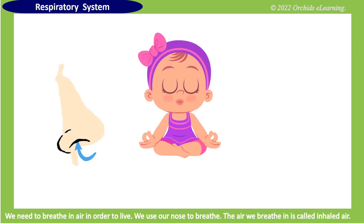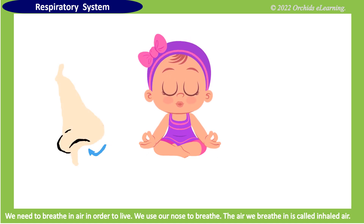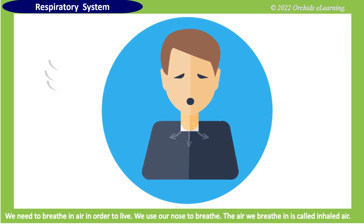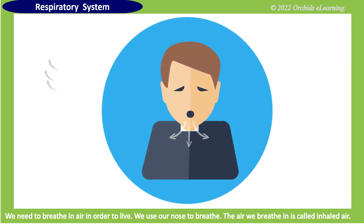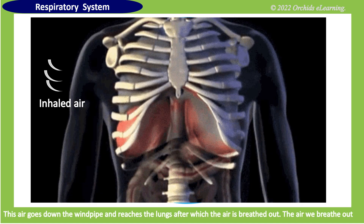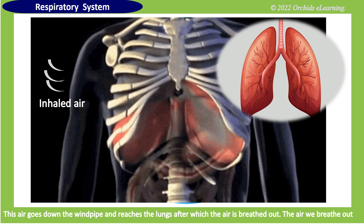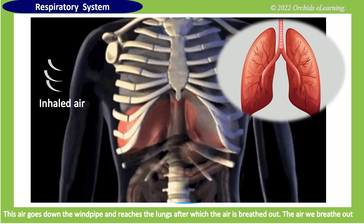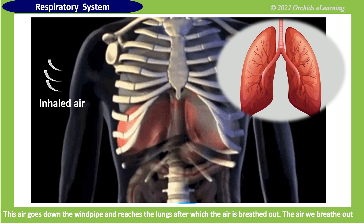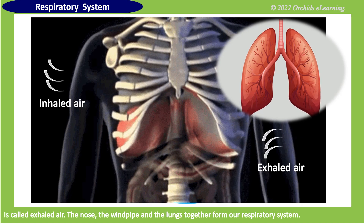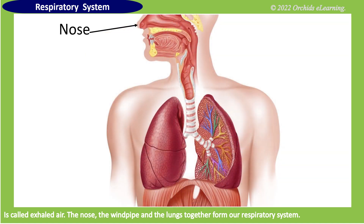We use our nose to breathe. The air we breathe in is called inhaled air. This air goes down the windpipe and reaches the lungs, after which the air is breathed out. The air we breathe out is called exhaled air. The nose, the windpipe, and the lungs together form our respiratory system.